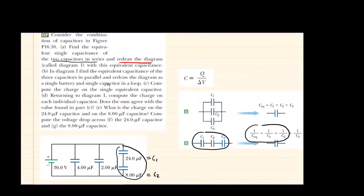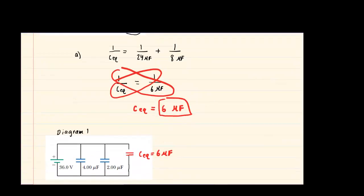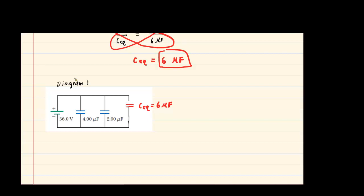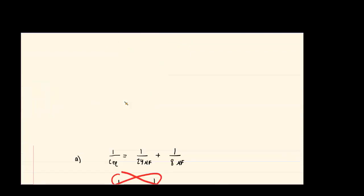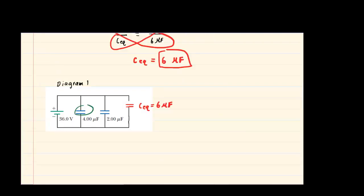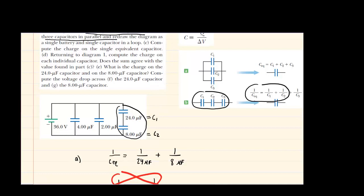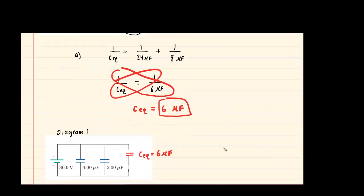Now we look at part B. Part B says find the equivalent capacitance of the three capacitors in parallel and then redraw as a single battery and a single capacitor in a loop. Study this picture and ask yourself whether these three capacitors are in series or in parallel. Hopefully you agree that they are indeed in parallel. Because they're in parallel, we look at the formula: to find equivalent capacitance of parallel capacitors, all we do is sum the individual capacitances.